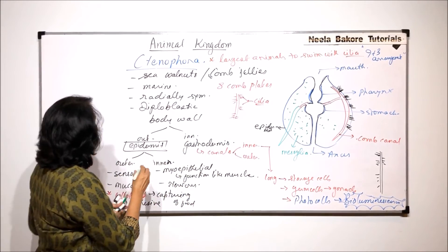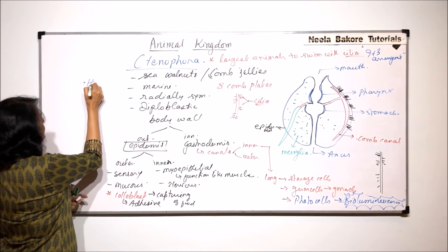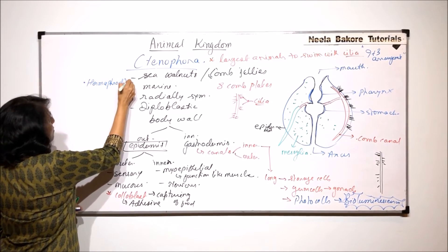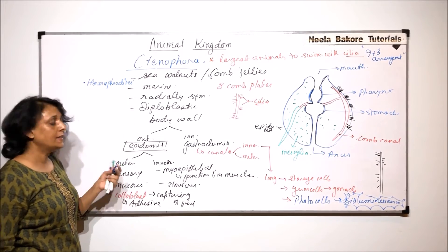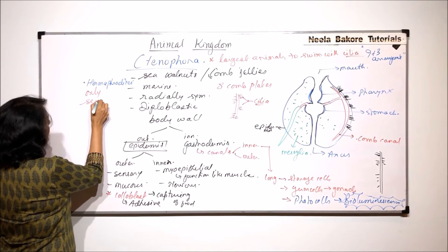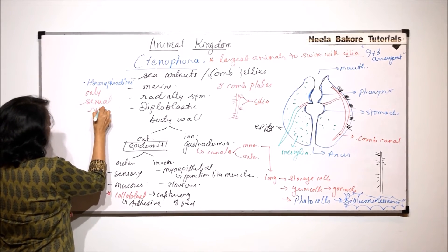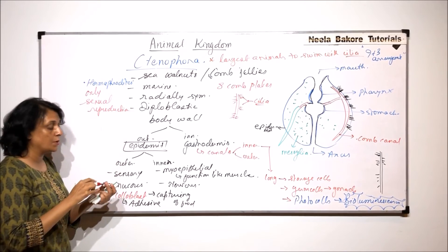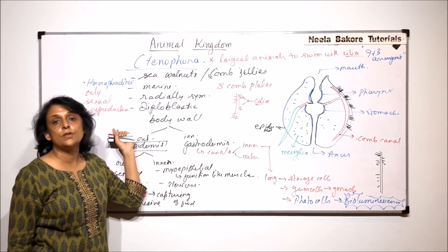They are hermaphrodites. Most of them are hermaphrodites. And they exhibit only sexual reproduction. Only sexual reproduction is reported in ctenophorans.